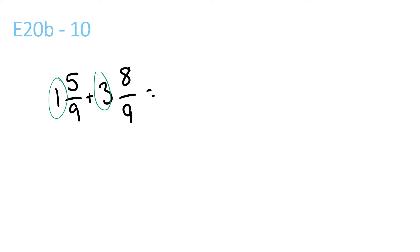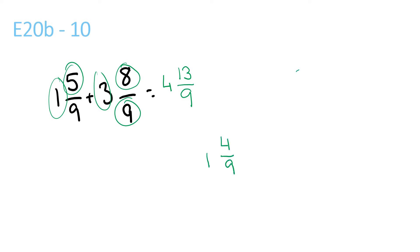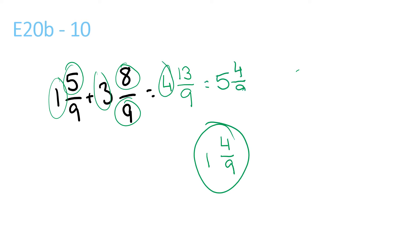1 plus 3 is 4. 5 plus 8 is 13 over 9. 9 goes into 13 once with a remainder of 4 over 9. So 1 and 4 over 9 plus 4 is equal to 5 and 4 over 9.